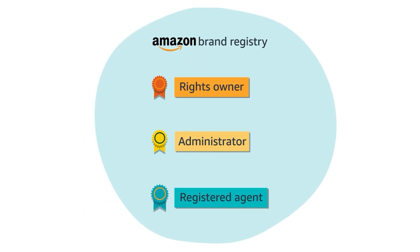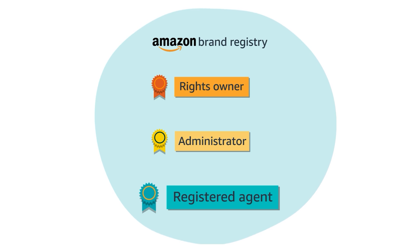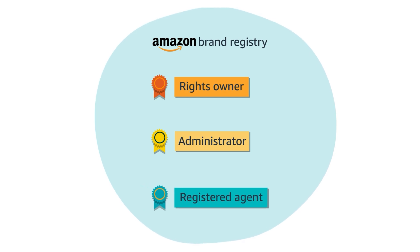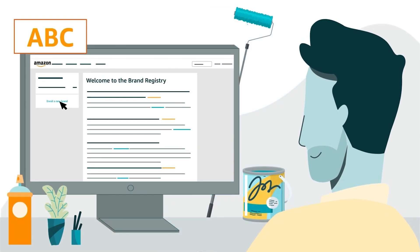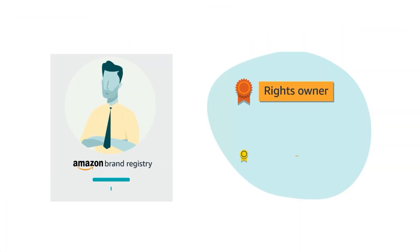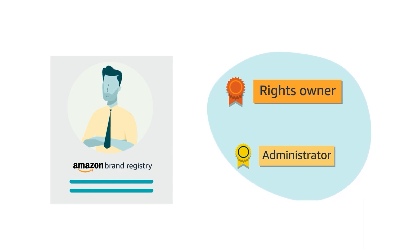There are three roles available to Brand Registry accounts: Rights Owner, Administrator, and Registered Agent. When a brand is first enrolled, the account of the seller who enrolled it is automatically assigned the first two roles, Rights Owner and Administrator.